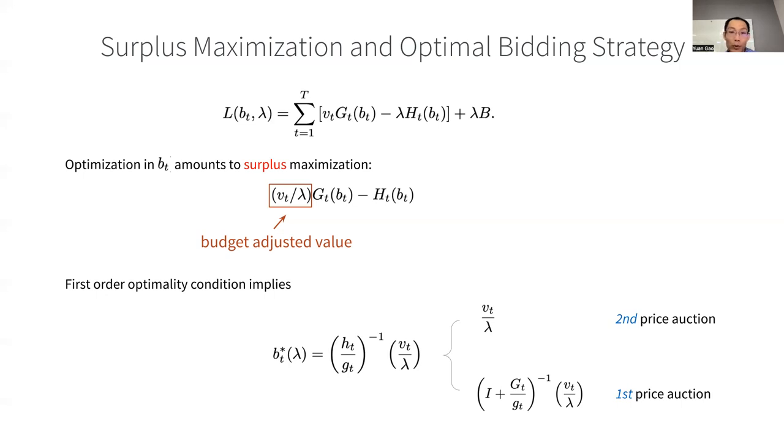Now the remaining thing to do is to find the optimal Lagrangian multiplier lambda, because then we know how much of the bid to submit in each ad request, given the proper estimated v and g, the winning probabilities.